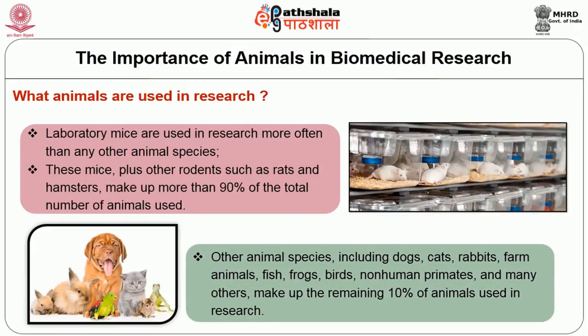Animal welfare activists fight for the rights of animals, arguing that too many animals are being harmed in scientific and medical research. If you look at the actual animals used in research, laboratory mice are used maximum — more often than any other animal species. Mice plus other small rodents such as rats and hamsters make up 90% of the total number of animals used. Only the remaining 10% involves other species like dogs, cats, rabbits, farm animals, fishes, frogs, birds, and non-human primates such as monkeys.